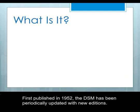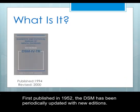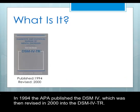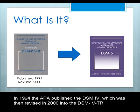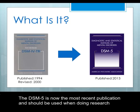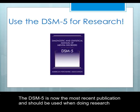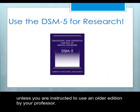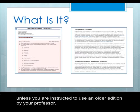First published in 1952, the DSM has been periodically updated with new editions. In 1994, the APA published the DSM IV, which was then revised in 2000 into the DSM IV TR. In May 2013, the fifth edition was published as the DSM V, which is now the most recent publication and should be used when doing research unless instructed to use an older edition by your professor.